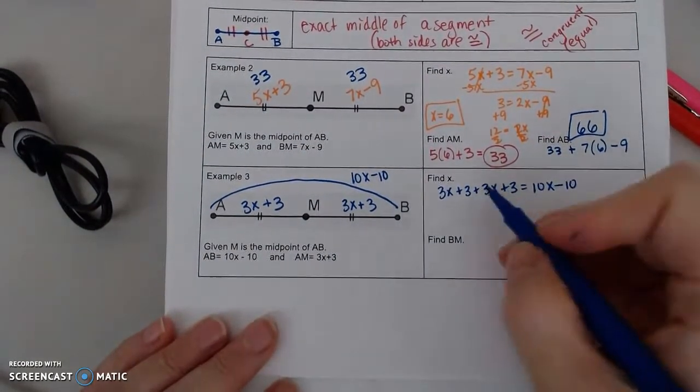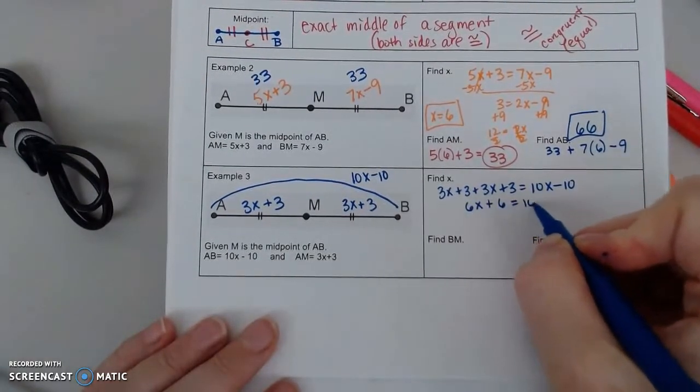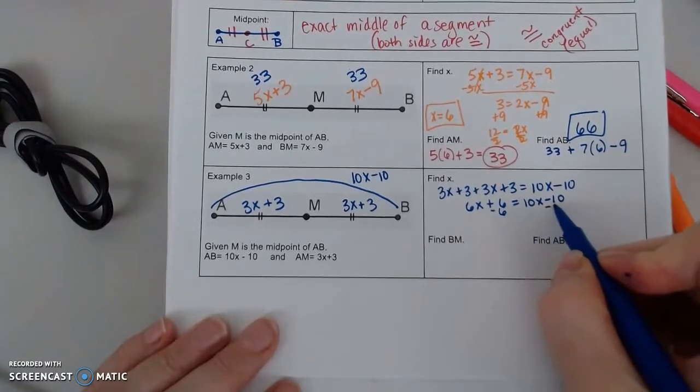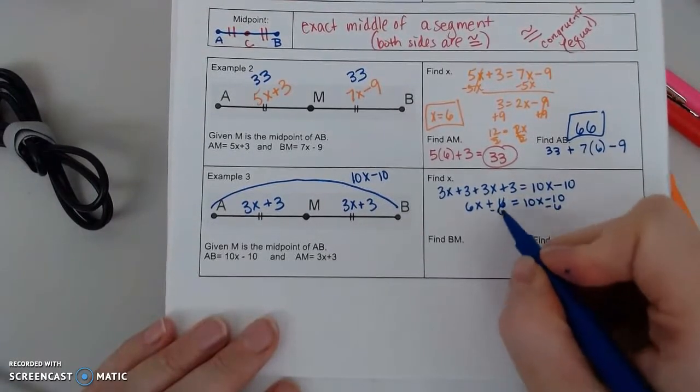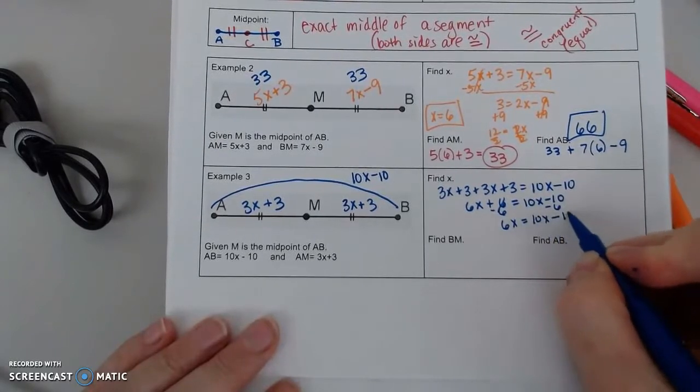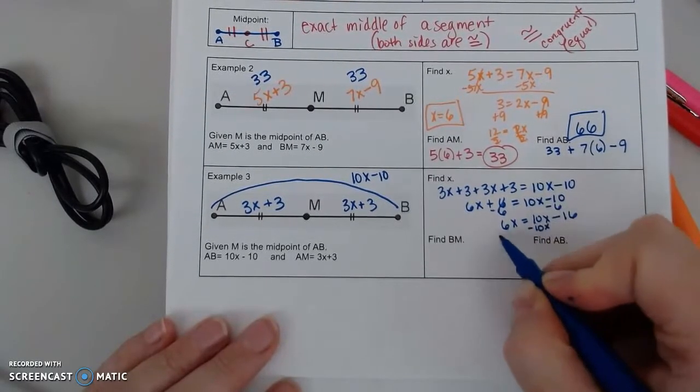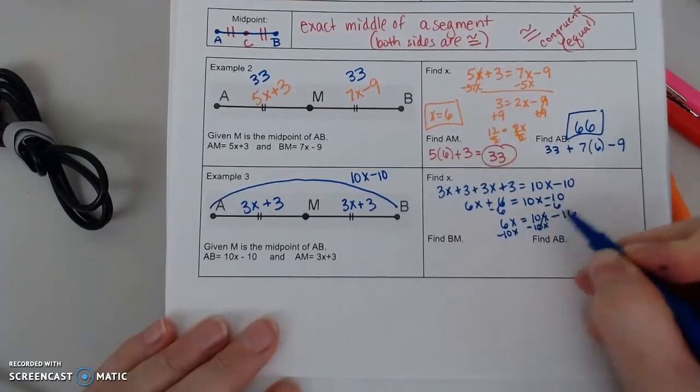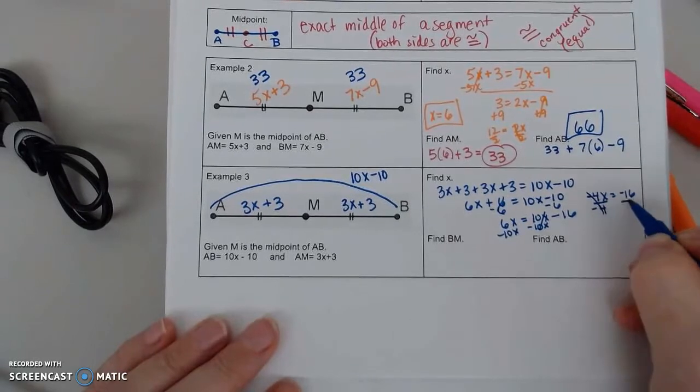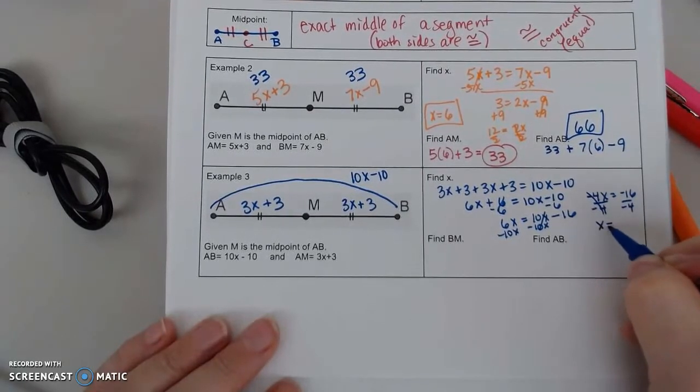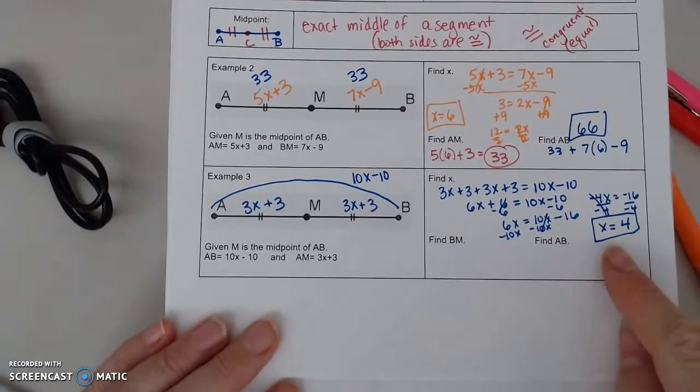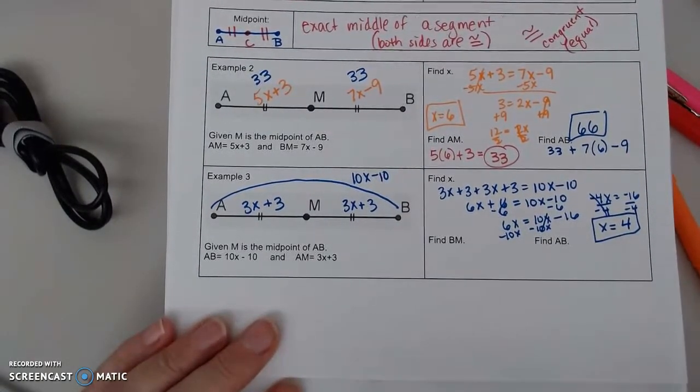So I get 6X plus 6. I'm going to subtract 6. So 6X equals 10X minus 16, which means I have to subtract 10X. So negative 4X equals negative 16, divide by negative 4. So X equals 4. Now, X can be a positive or a negative number, so don't worry about that. Lengths can never be negative.